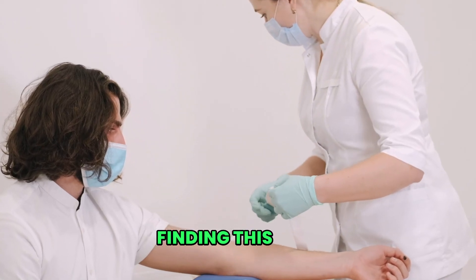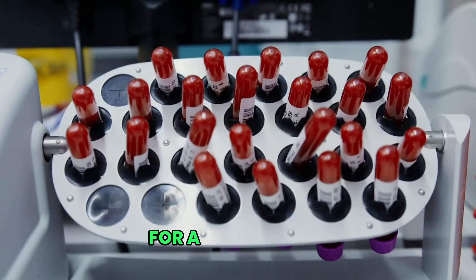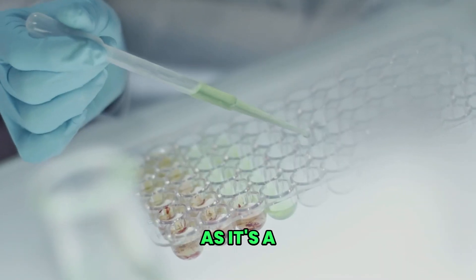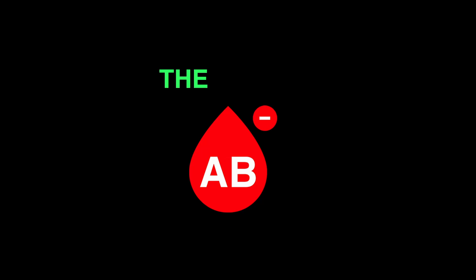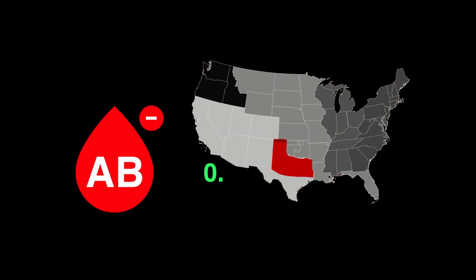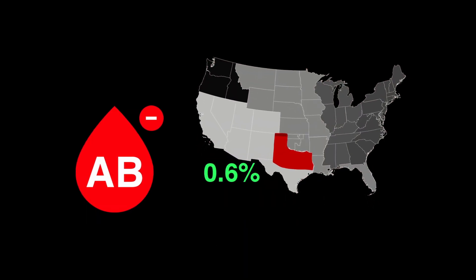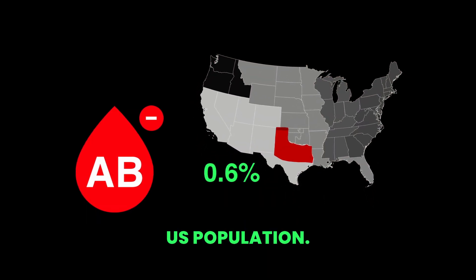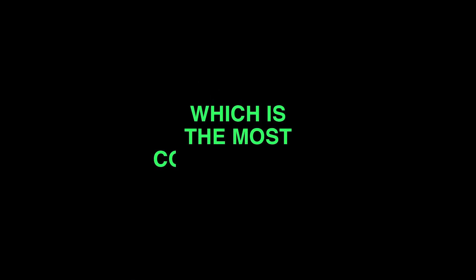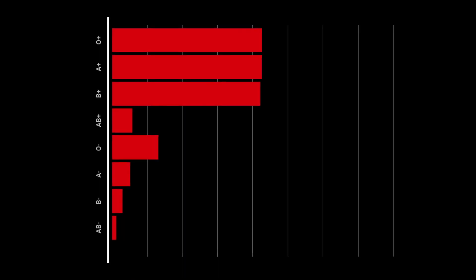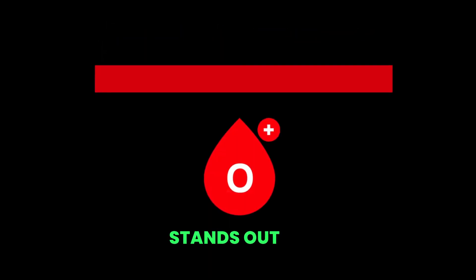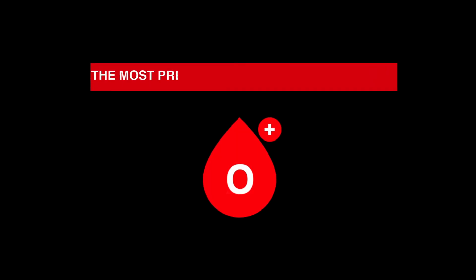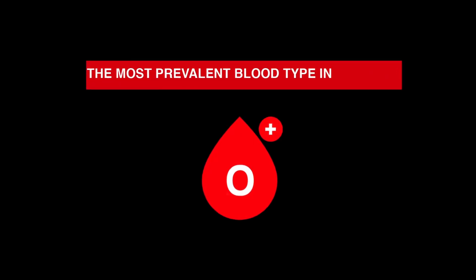However, finding this type for a transfusion can be tricky, as it's a rare blood type, with AB negative being the rarest, representing only 0.6% of the U.S. population. So which is the most common type? With 37.4% of the population, type O positive stands out as the most prevalent blood type in the USA.